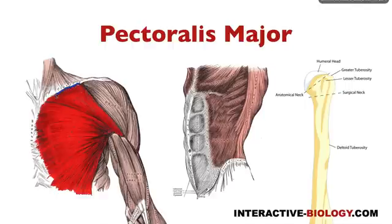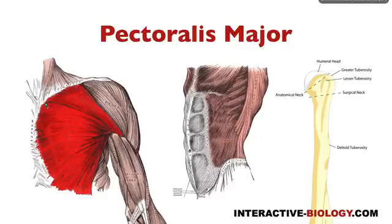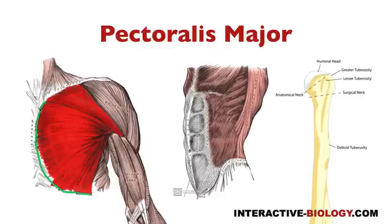So once again, the origin of the clavicular head is the anterior portion of the medial half of the clavicle. Then we have the sternocostal head, and the origin here — it's sternocostal, so it has something to do with the sternum and with the ribs. The word costal comes from the Latin word costa, which refers to ribs. The origin of the sternocostal portion includes the anterior surface of the sternum and also the upper six costal cartilages.